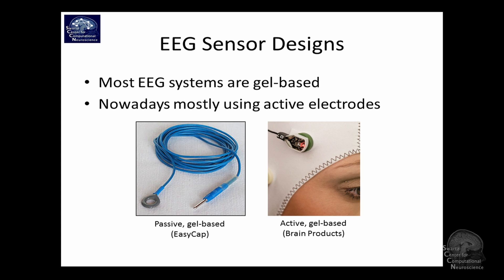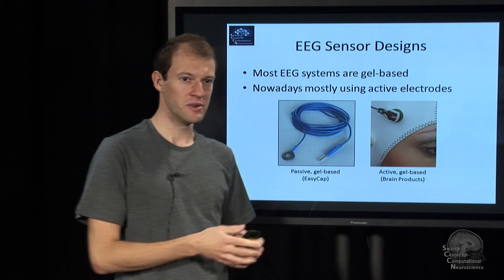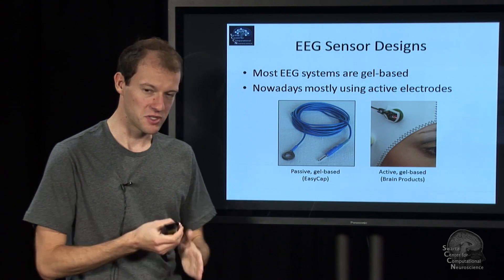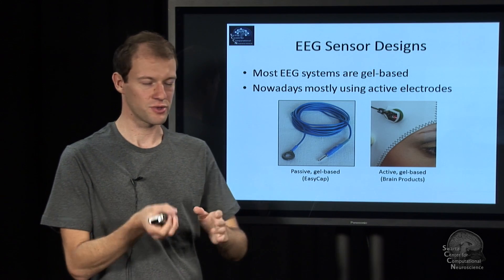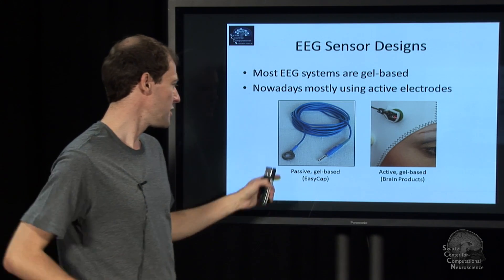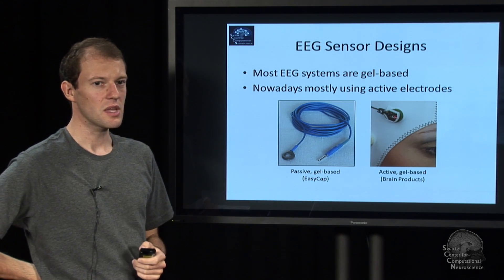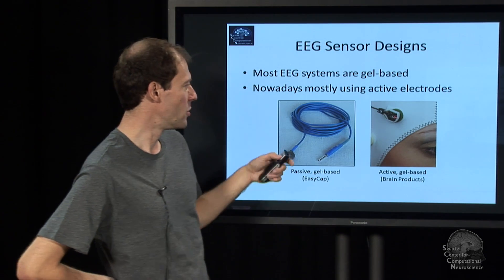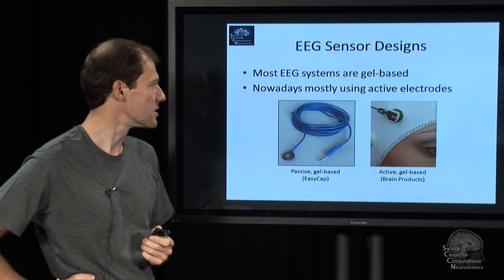In many cases you can actually have much worse impedances — basically the resistance between the electrode and the skin — than you would with passive electrodes. Still, most advanced systems have active electrodes nowadays.